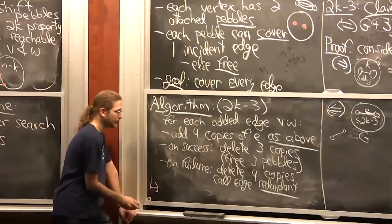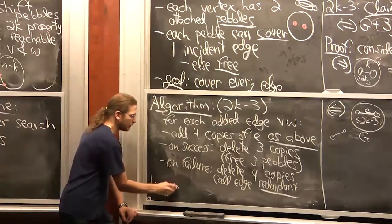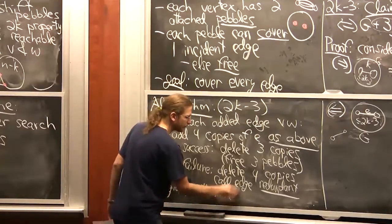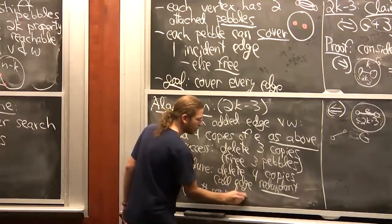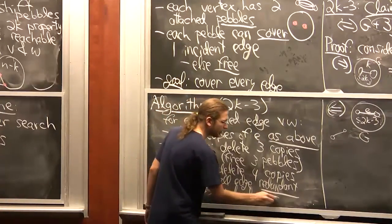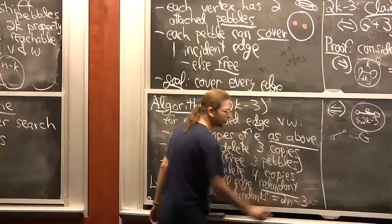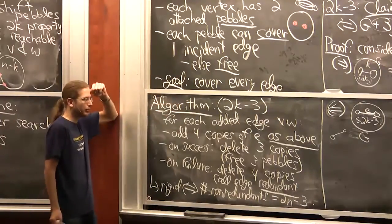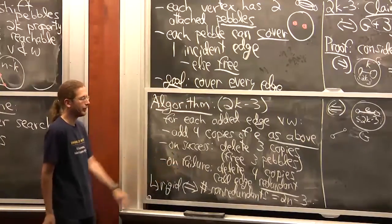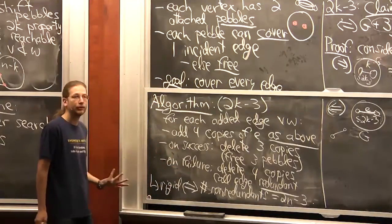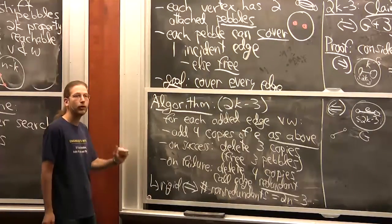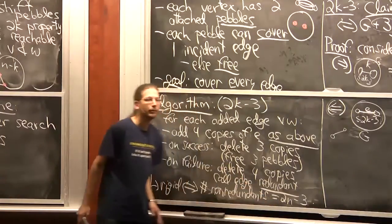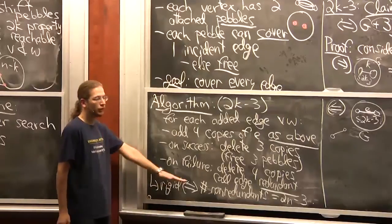At the end of the algorithm, the graph is generically rigid if and only if the number of non-redundant edges equals 2n minus 3. The algorithm gives more than a yes/no answer: it identifies which edges are overbracing (redundant) and which contribute to rigidity, and with a bit more work it can identify which parts of the structure form rigid components.